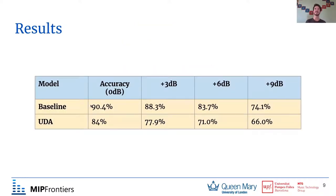Looking at the results, we were able to get the unsupervised domain adaptation approach to reach a slightly decent standard accuracy, but we still haven't been able to get any concrete results. Simply looking at baseline accuracy didn't give us enough information to understand what was actually happening in terms of volume sensitivity.